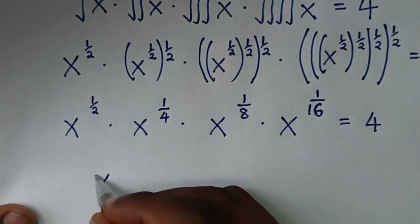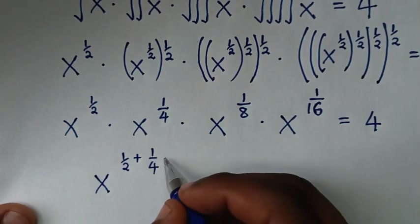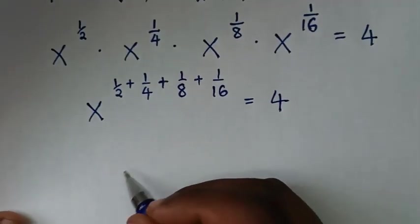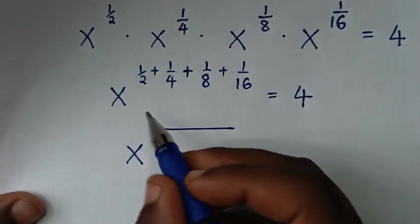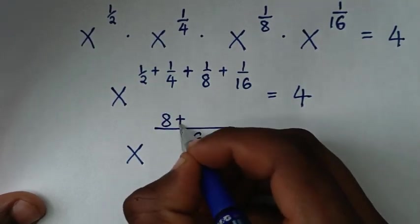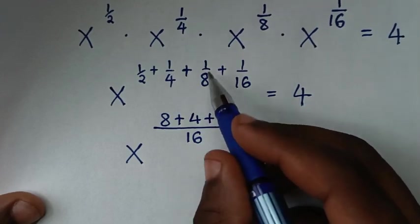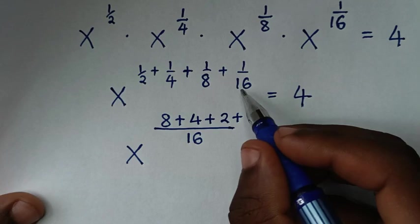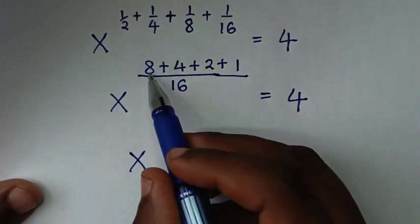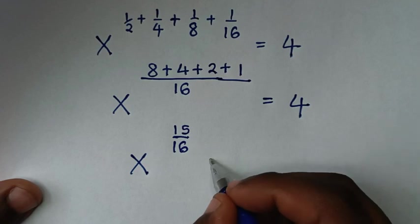Then it will be x to the power of 1 over 2 plus 1 over 4 plus 1 over 8 plus 1 over 16, because they have the same base x. The common denominator is 16: 16 divided by 2 is 8, plus 16 divided by 4 is 4, plus 16 divided by 8 is 2, plus 16 divided by 16 is 1. So it will be x to the power of 8 plus 4 plus 2 plus 1 over 16, which is 15 over 16, is equal to 4.